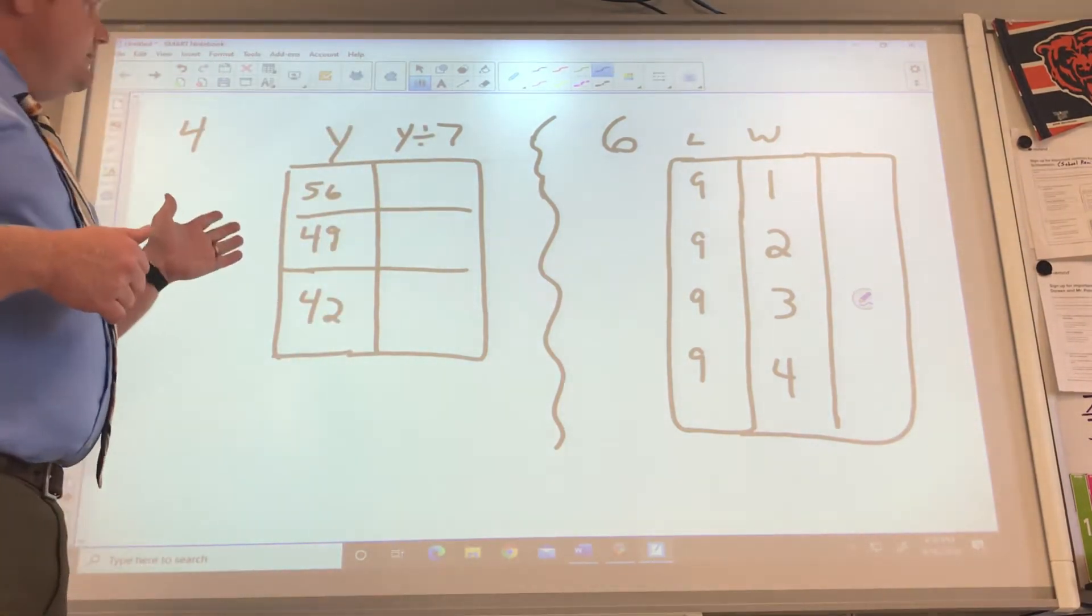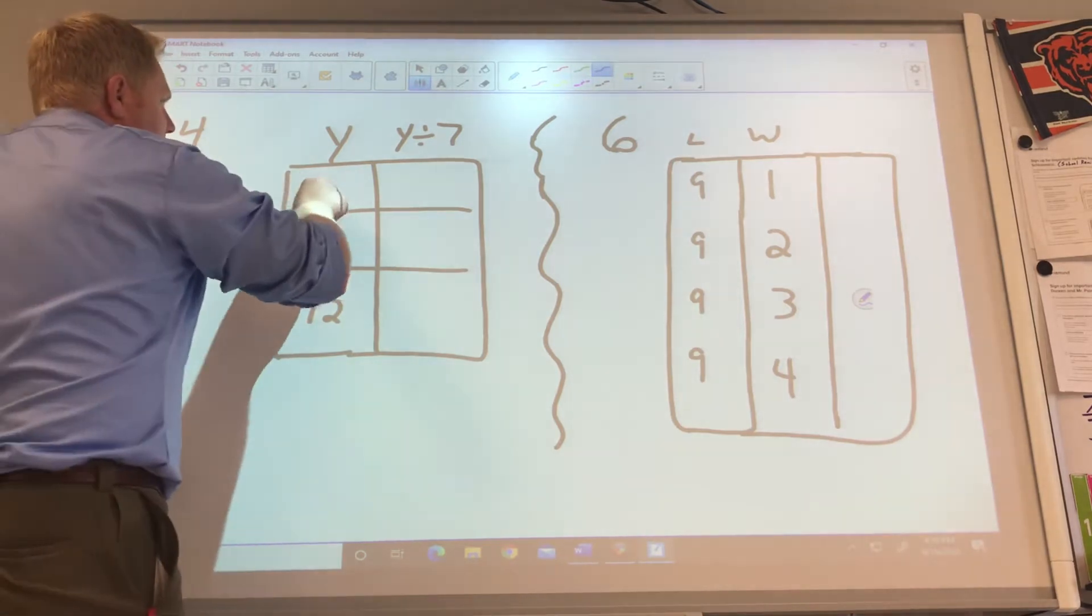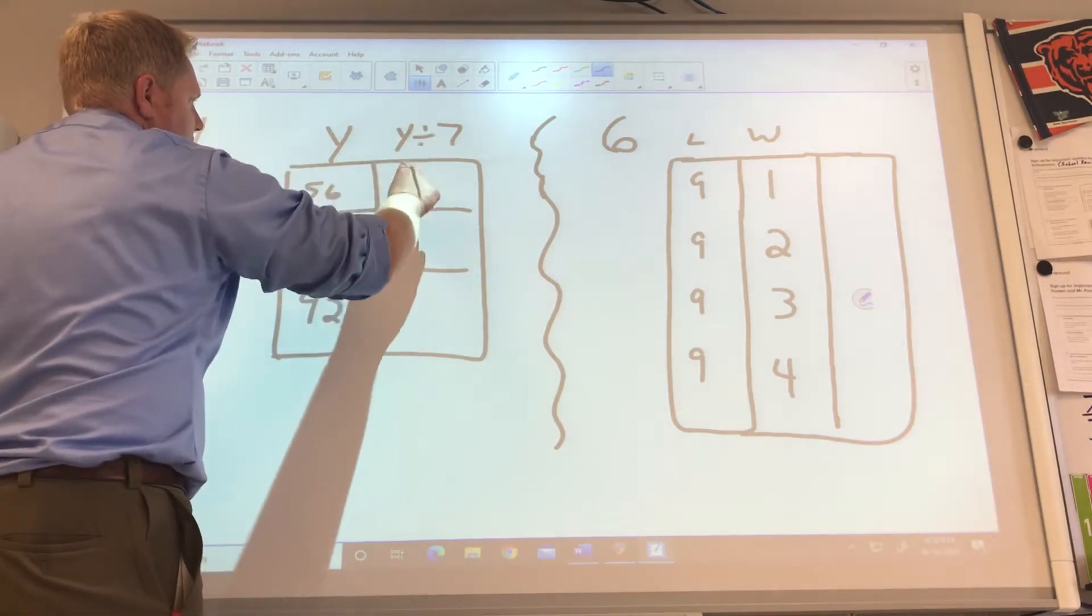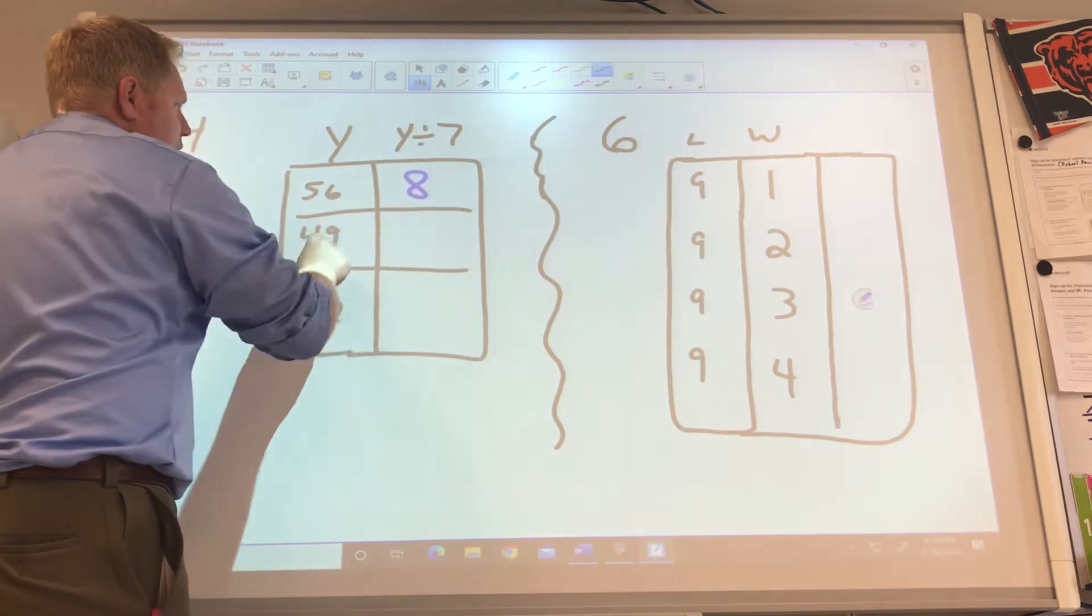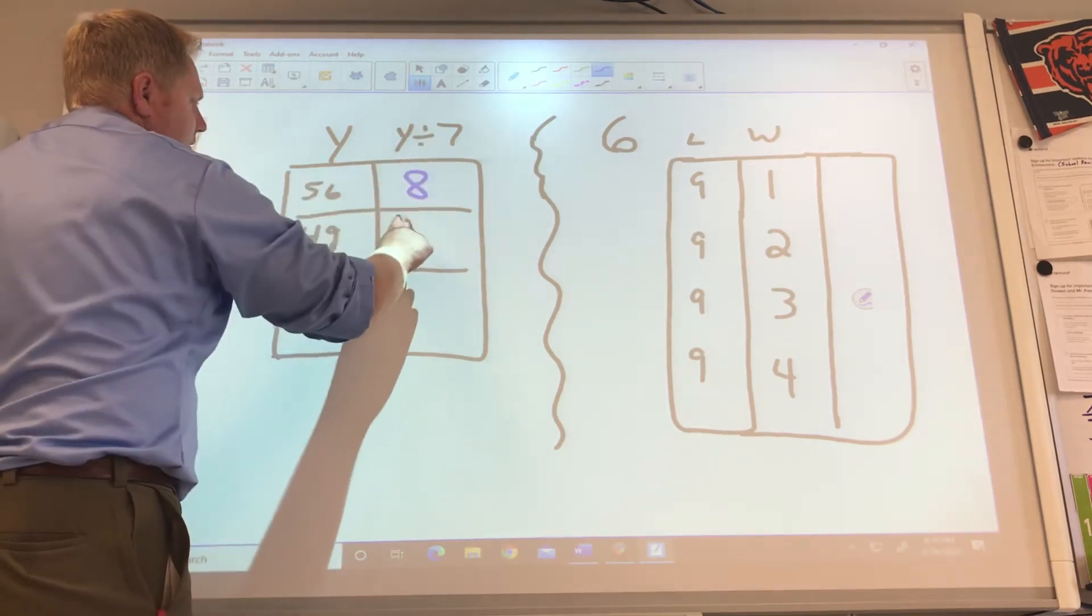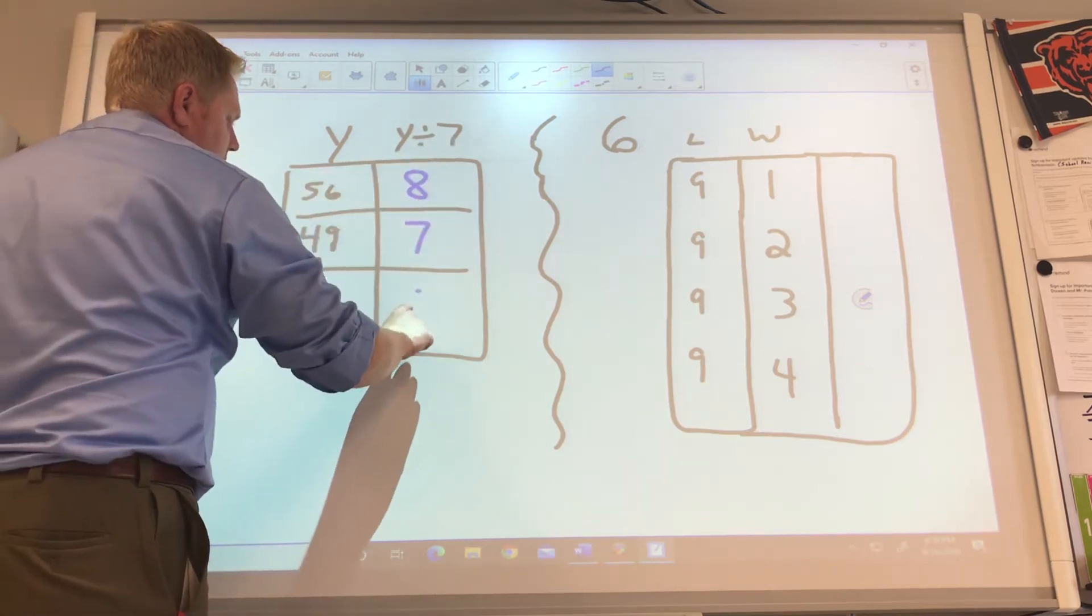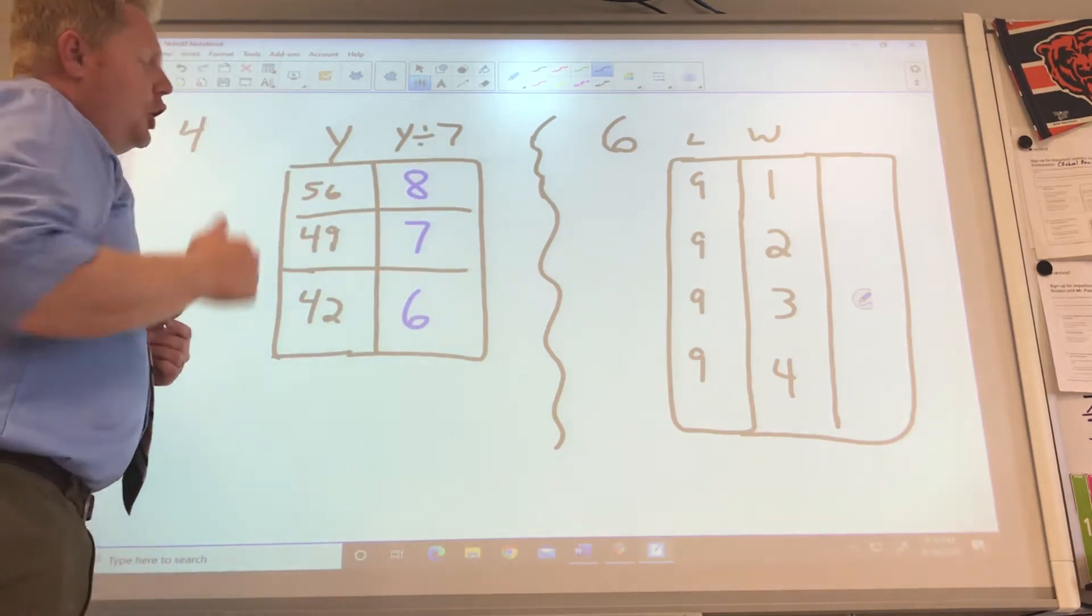This one says evaluate. That means whatever Y is, we put in for Y. 56 divided by 7, 8. 49 divided by 7, 7. 42 divided by 7, 6. Then we go there.